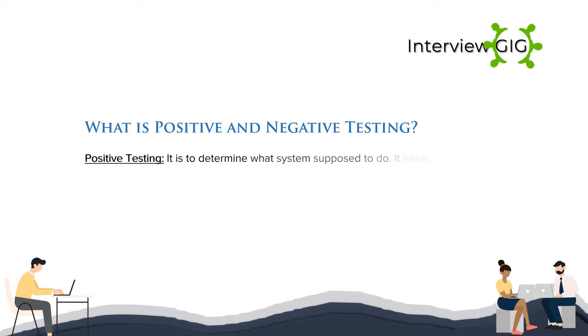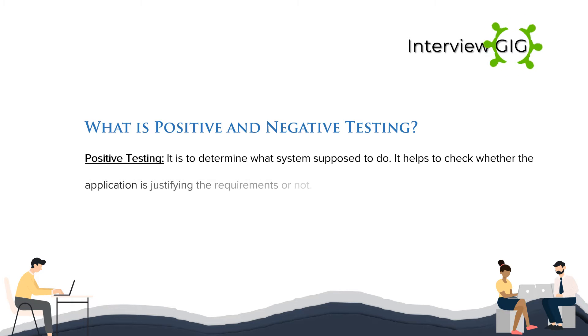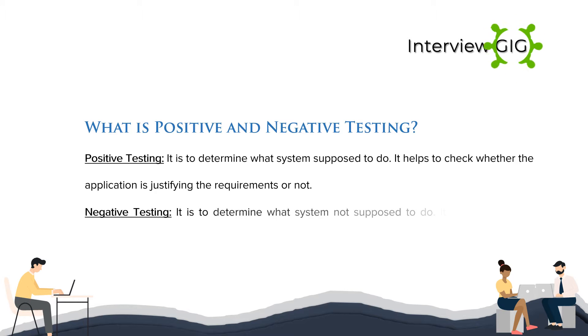What is positive and negative testing? Positive testing is to determine what the system is supposed to do; it helps to check whether the application is justifying the requirements or not. Negative testing is to determine what the system is not supposed to do; it helps to find the defects from the software.